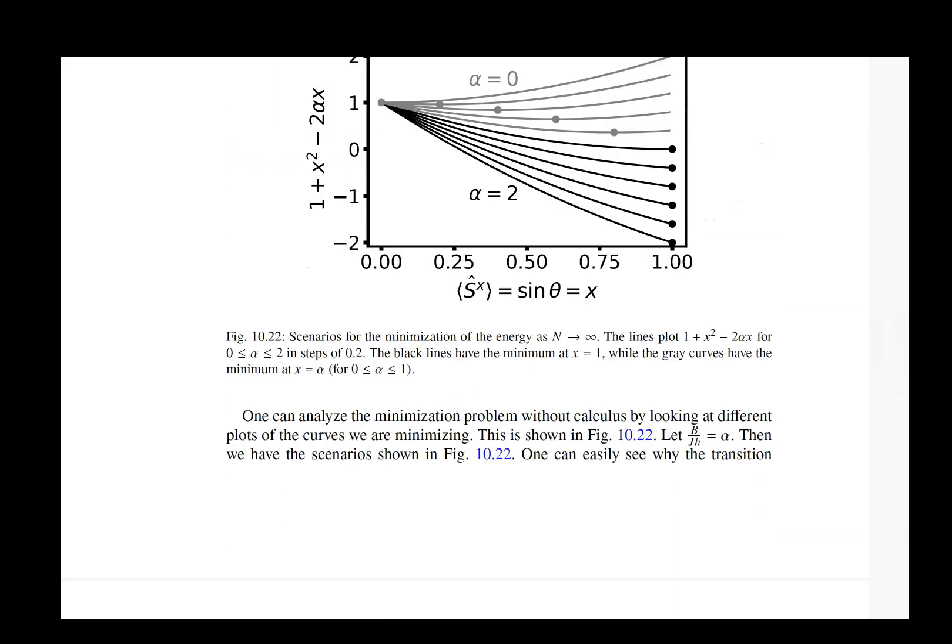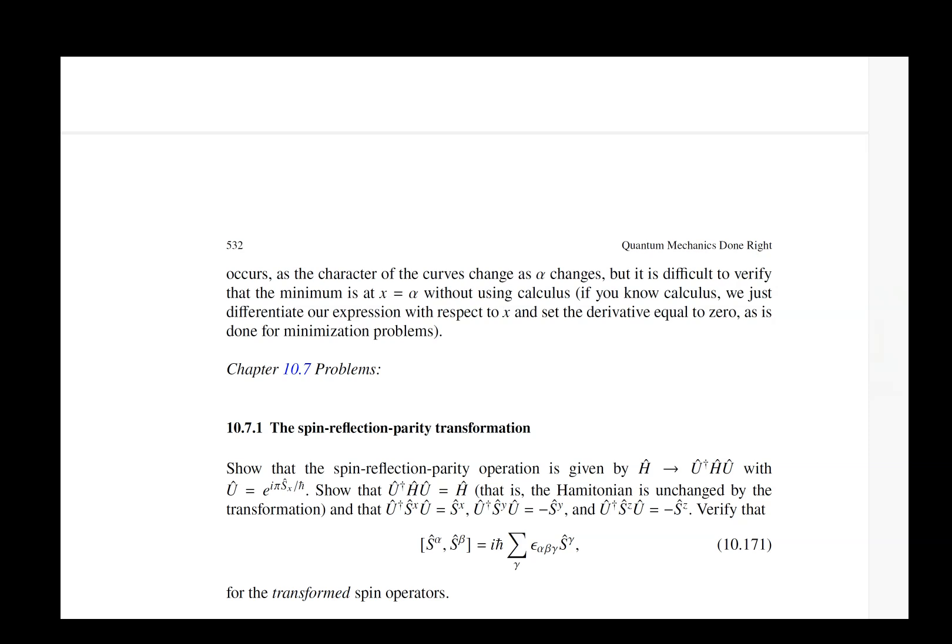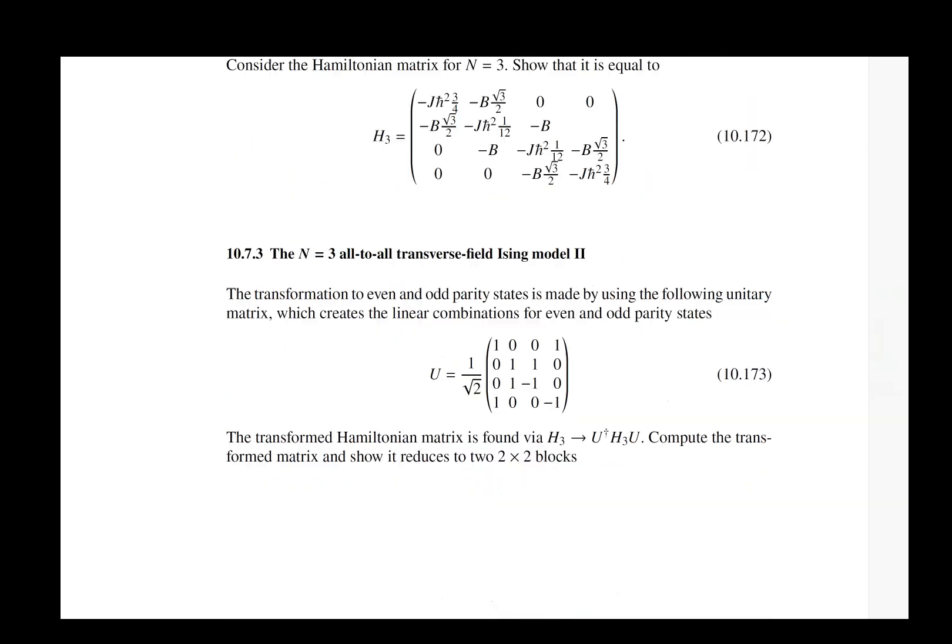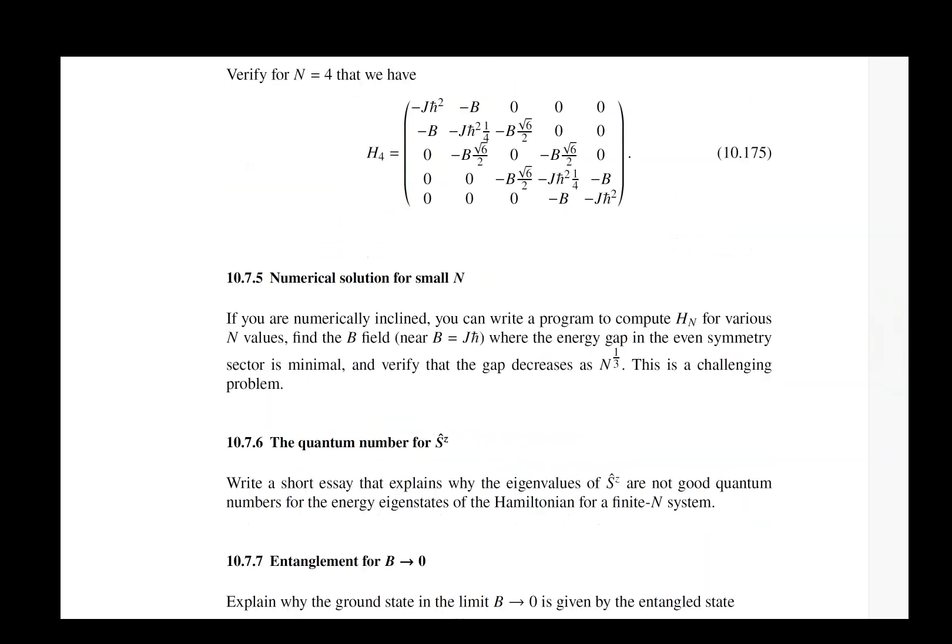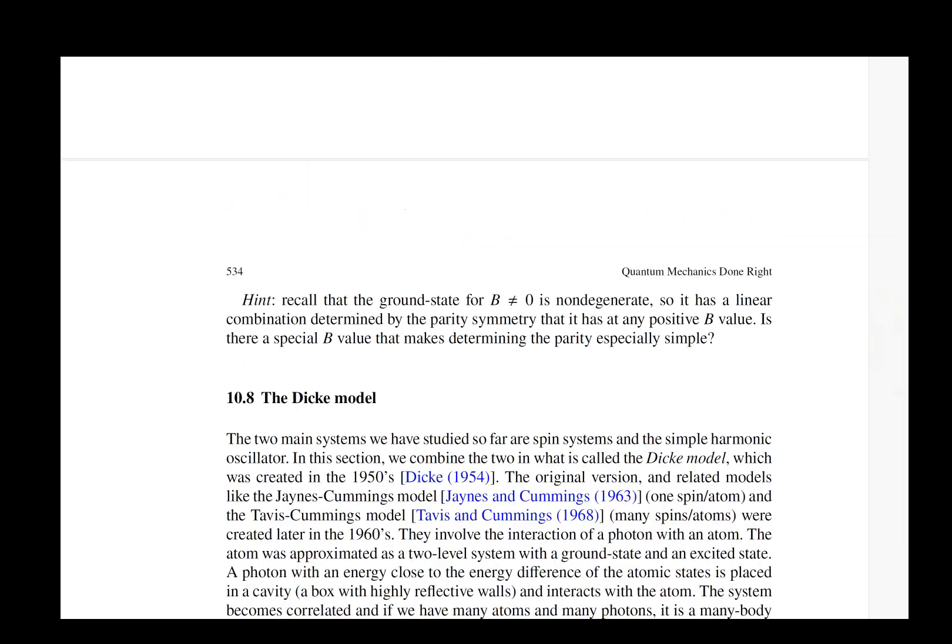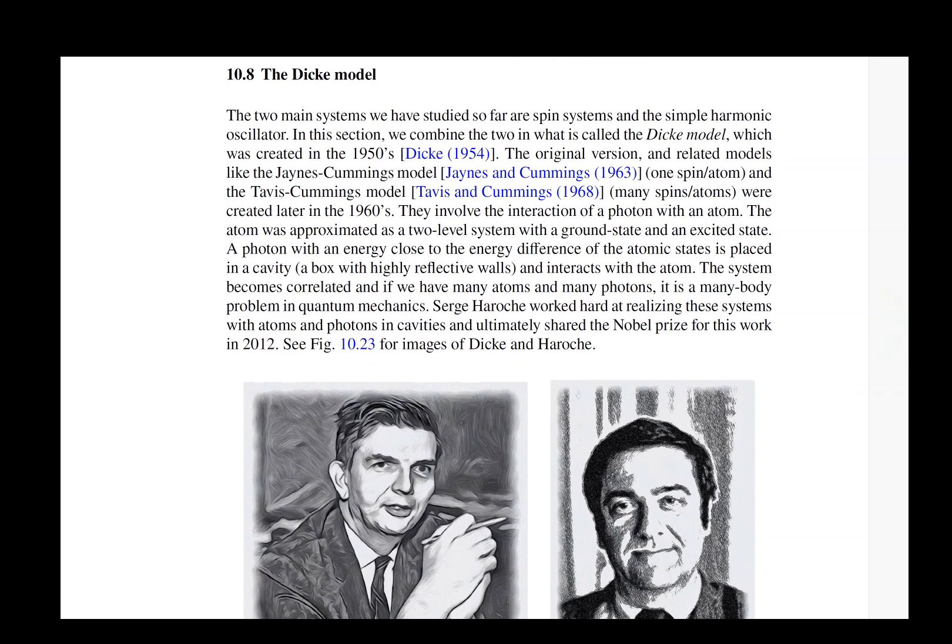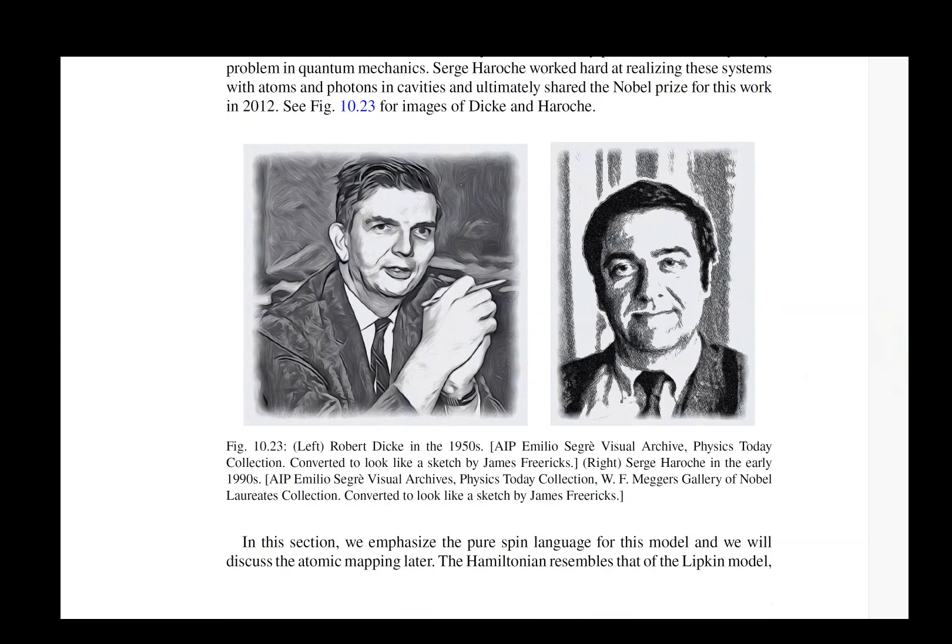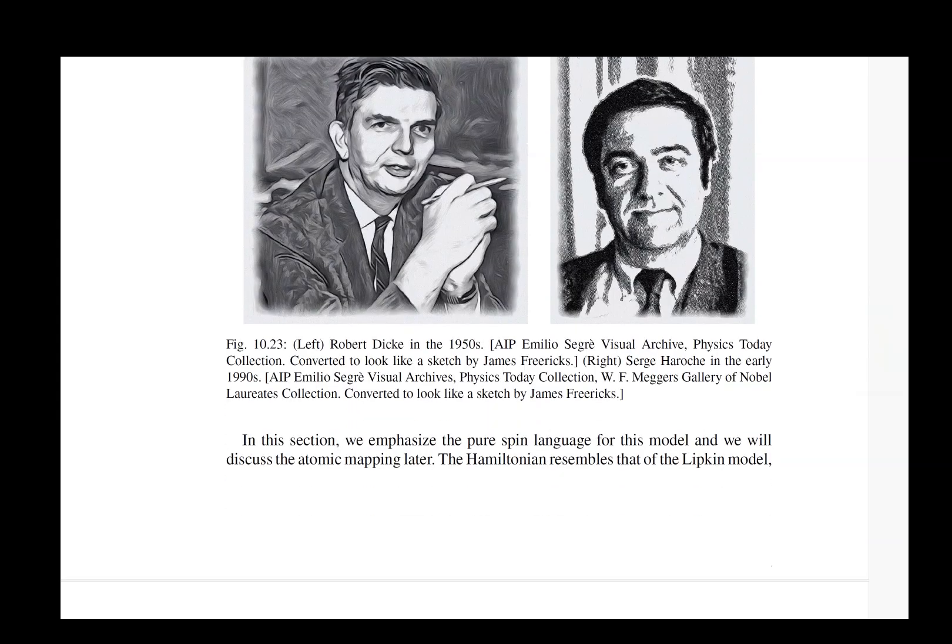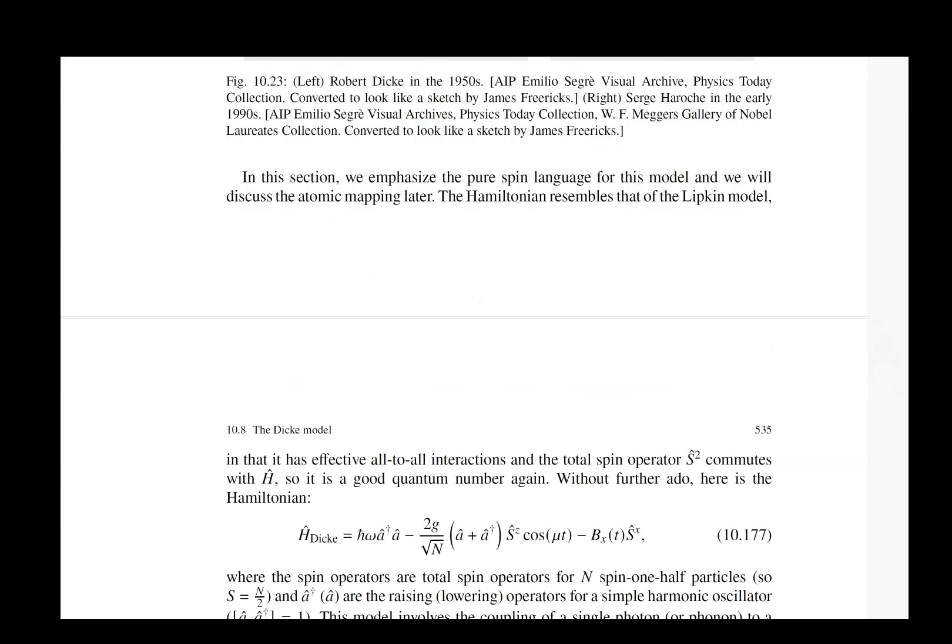It's a model that was looked at very carefully in the context of nuclear physics, because they thought it would be a way of describing some of the shell models in nuclear physics. I'm not sure it worked incredibly well. Then we have the Dickey model, and I also put in here a picture of Serge Haroche in addition to Dickey, because Serge Haroche has done a lot of interesting stuff on related models to the Dickey model. He has worked on what's called cavity QED. That's what he won his Nobel Prize for. Cavity QED is a beautiful set of experiments that we discuss a little bit here and also in the last chapter of the book.